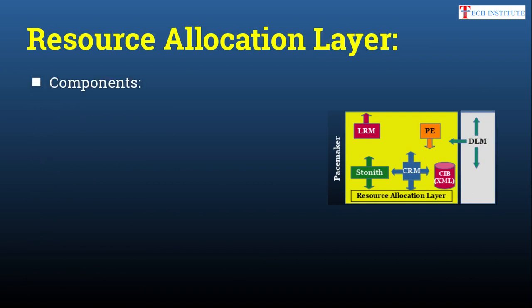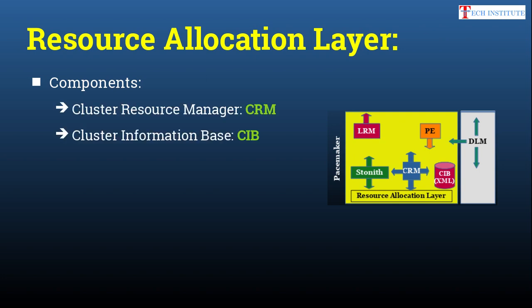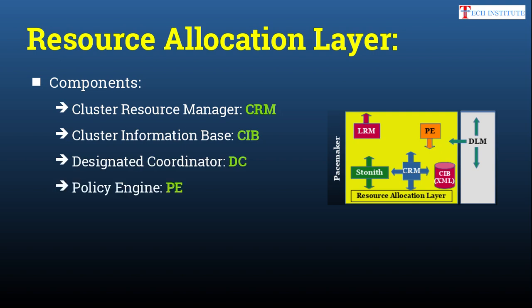Now let's move ahead with the resource allocation layer. It has various components: the Cluster Resource Manager (CRM), the Cluster Information Base (CIB), the Designated Coordinator (DC), the Policy Engine (PE), and the Local Resource Manager (LRM). We will see in detail about these components and their uses in our upcoming slides.